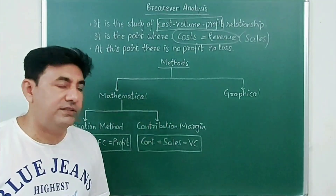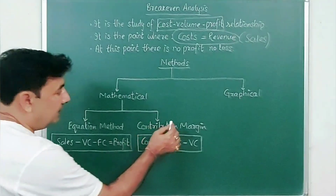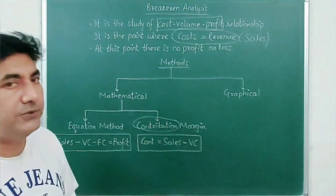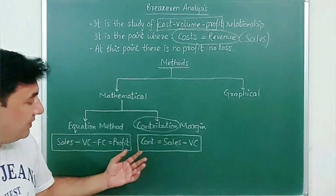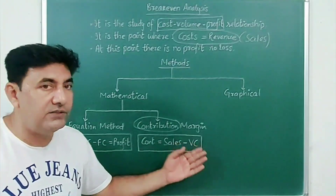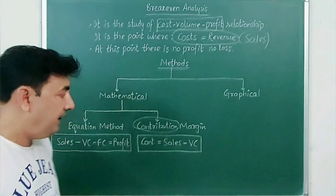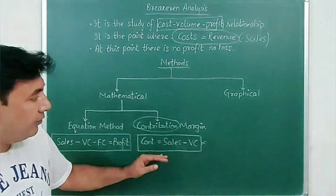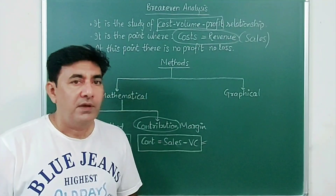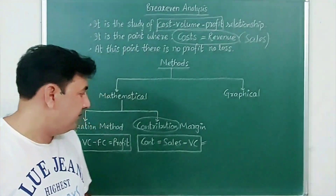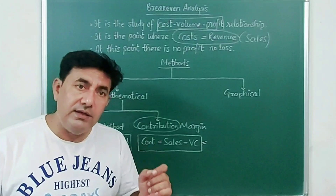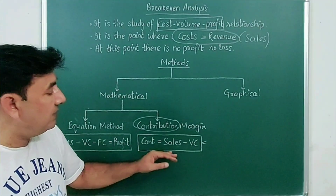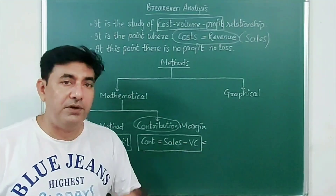In the contribution margin method, more emphasis is given on contribution. Contribution is equal to sales minus variable cost. This is a very important formula in MCO05 — do not forget it. Contribution is equal to sales minus variable cost.